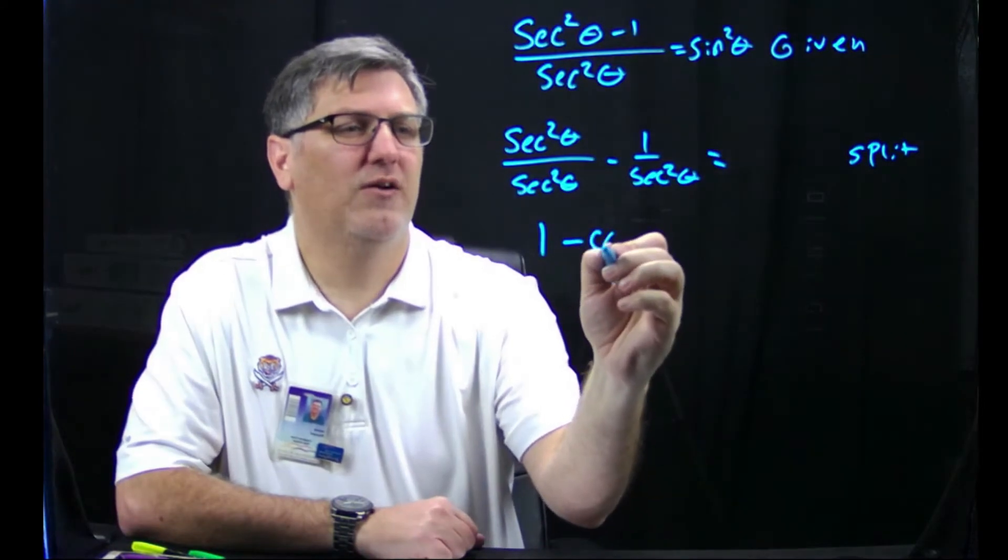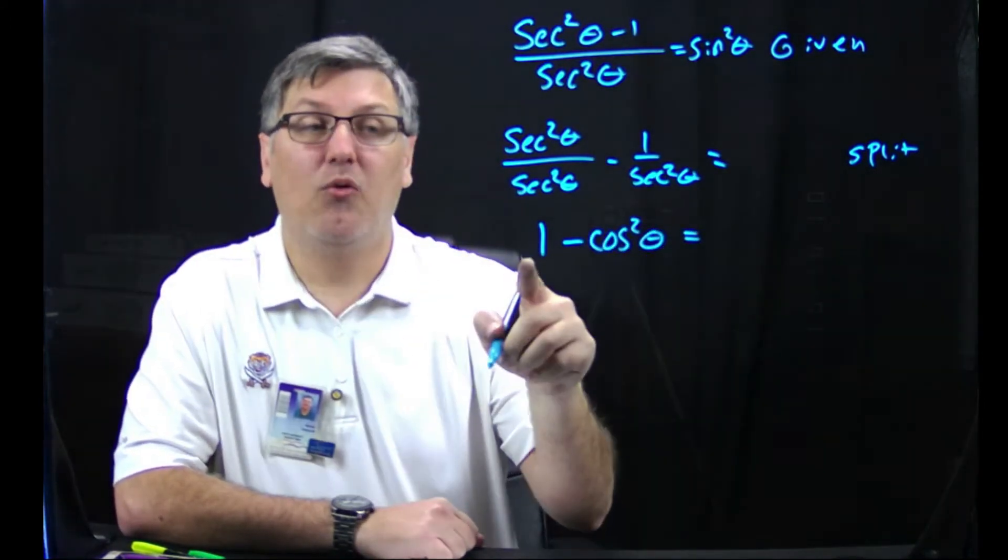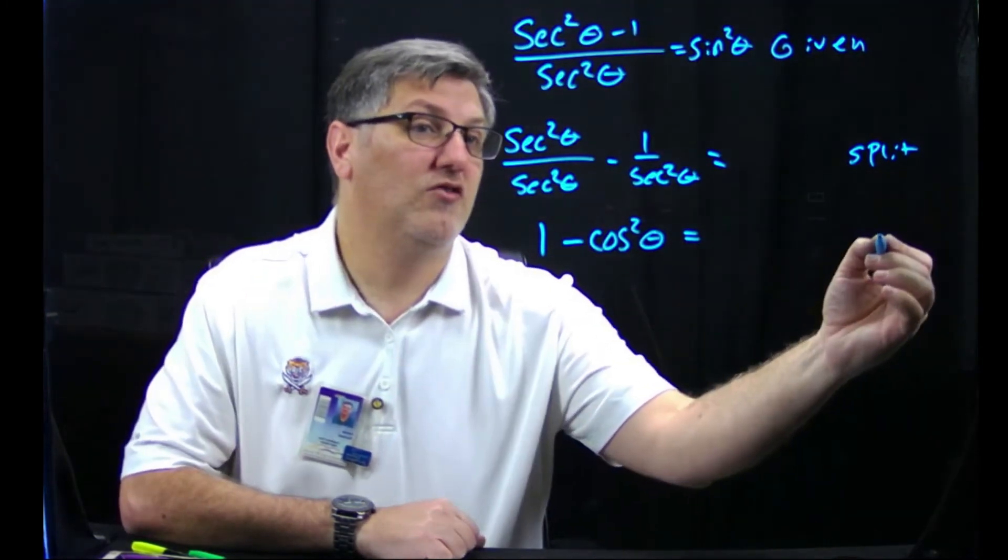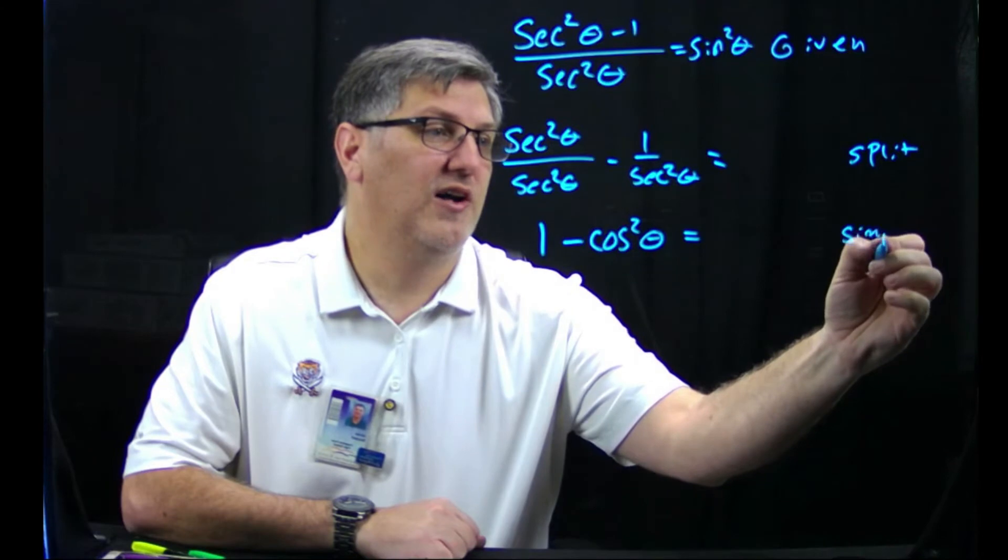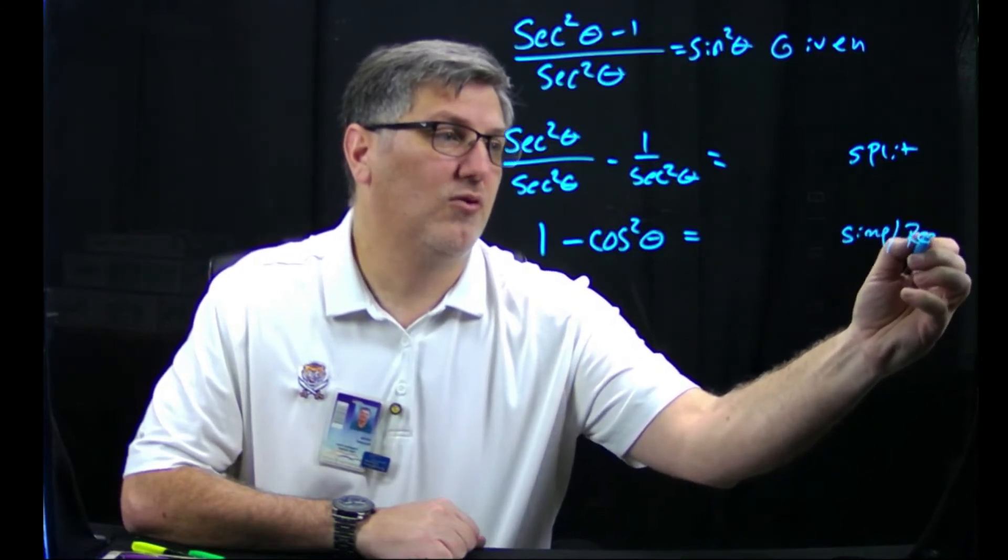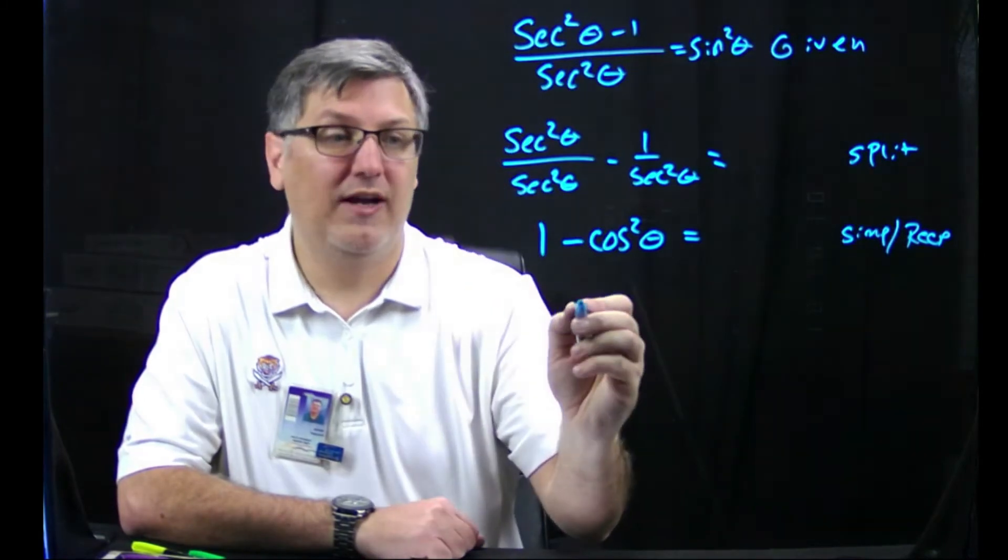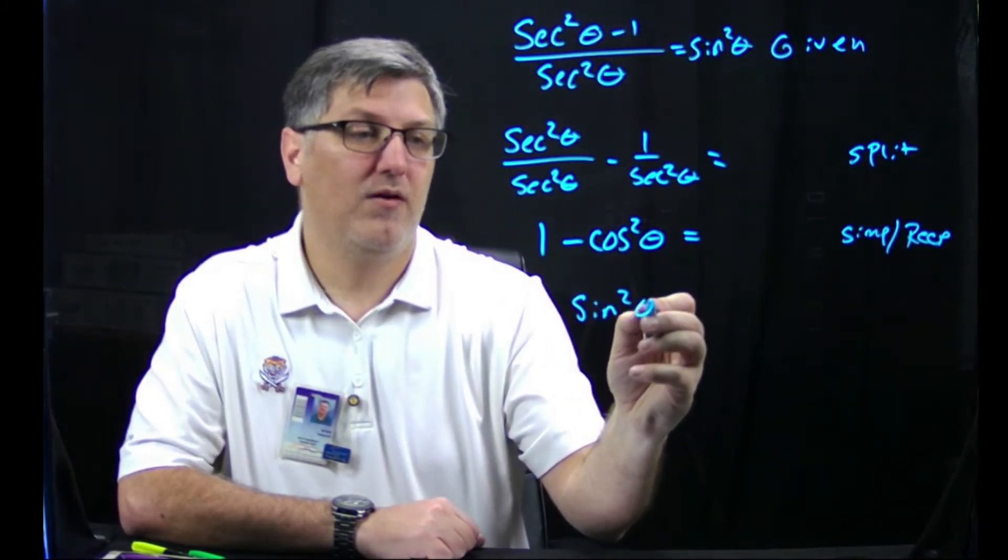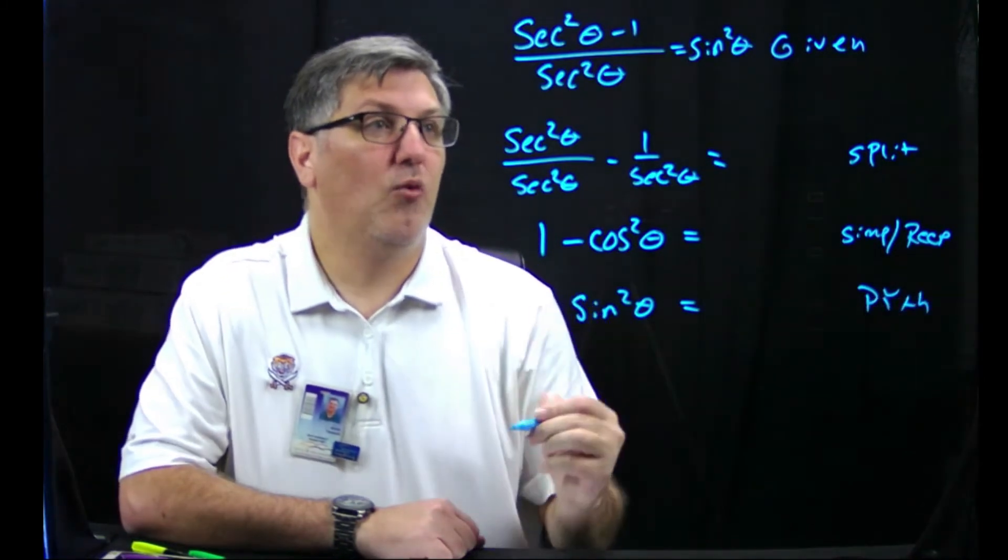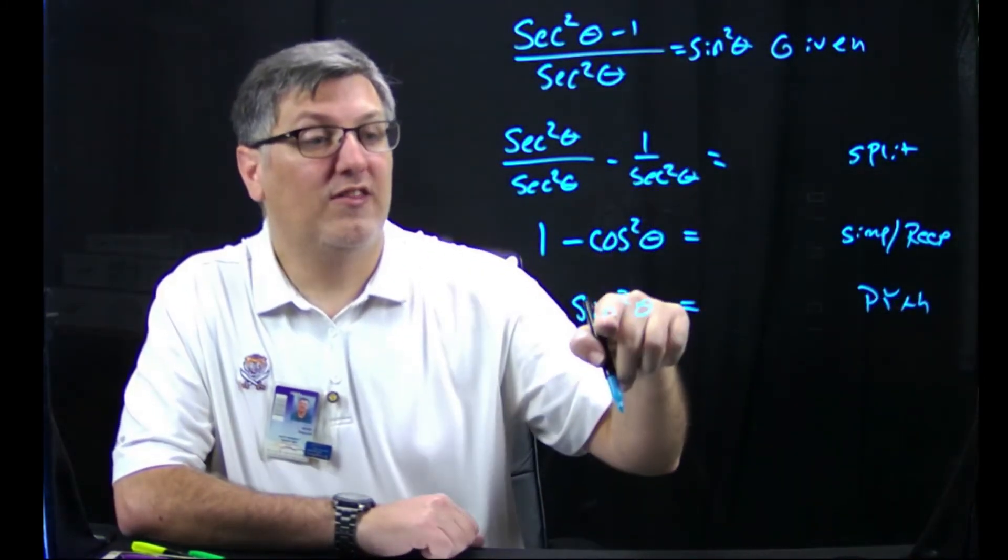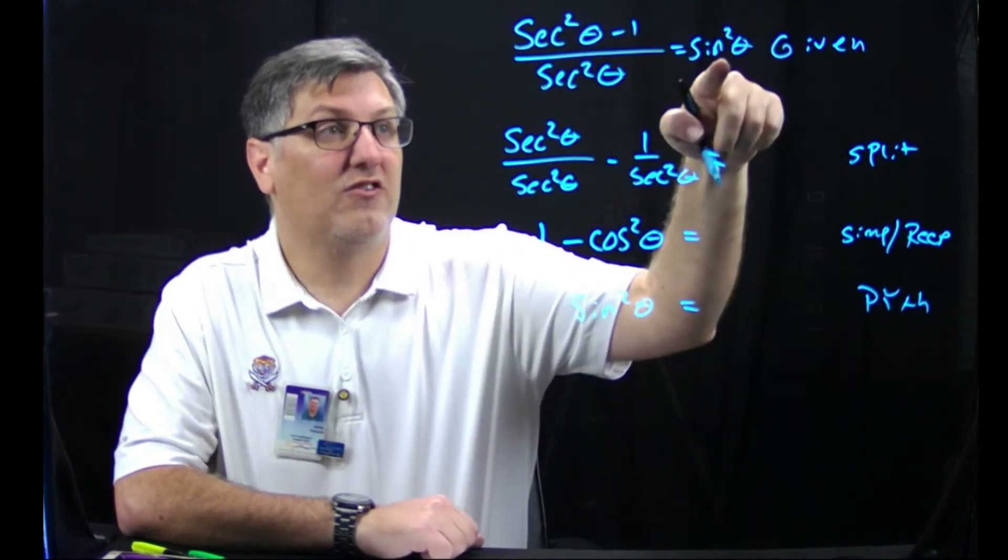And then this is minus, and one over sec²θ, that's cos²θ. I have my answer because now 1 - cos²θ, that's sin²θ by the Pythagorean identity. And voila, the ultimate goal is that this has to look exactly like this. Sin²θ looks exactly like sin²θ, we are done. This entire thing is your answer.